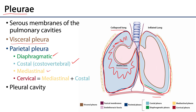Above the level of the first rib we have what's known as the cervical pleura. The cervical pleura is sometimes referred to as its own segment of the pleura and sometimes referred to as where the mediastinal meets the costal pleura. Keep in mind that between the visceral and parietal pleura there is a potential space called the pleural cavity. We say it's a potential space because these layers are very adjacent to one another, and as the walls and floor of the thoracic cavity change with contracting musculature, so will the lung expand and contract.